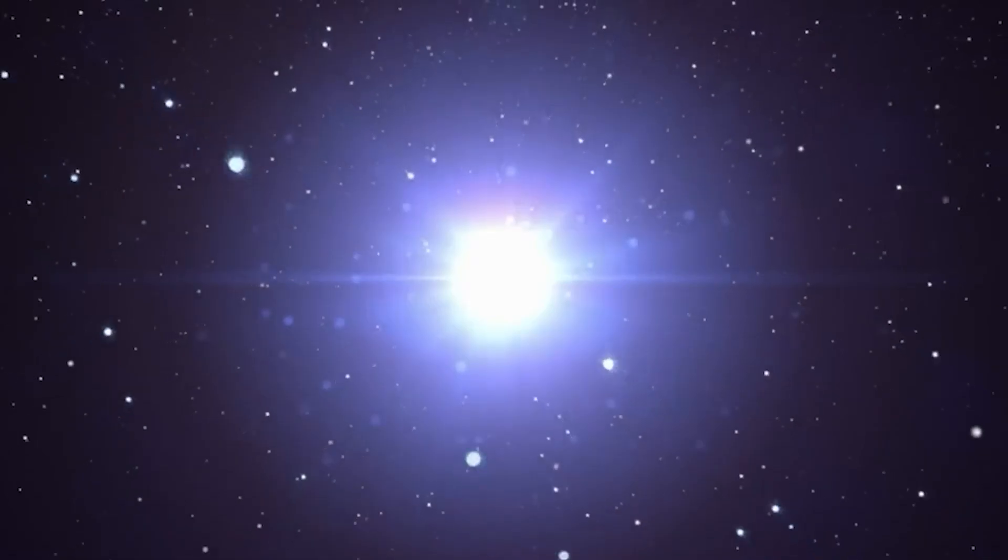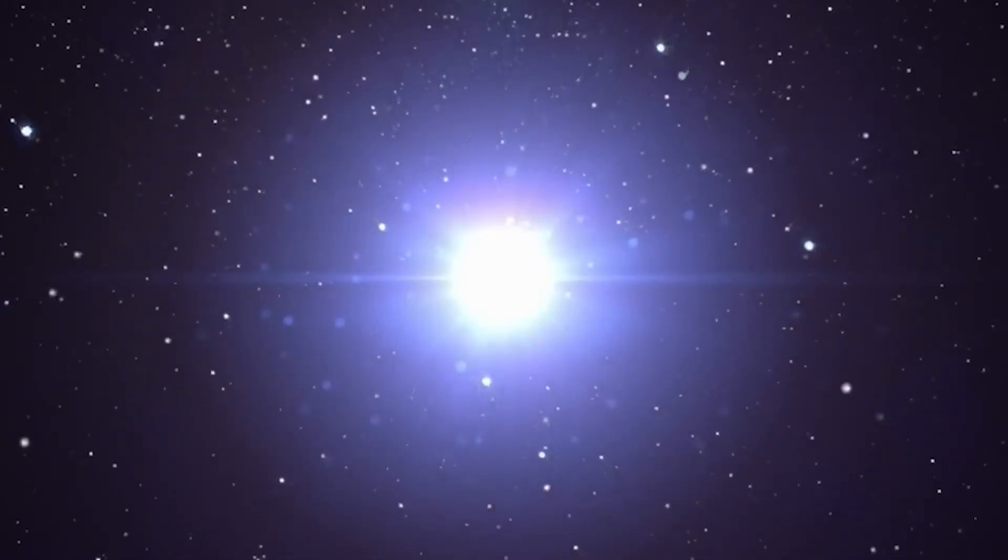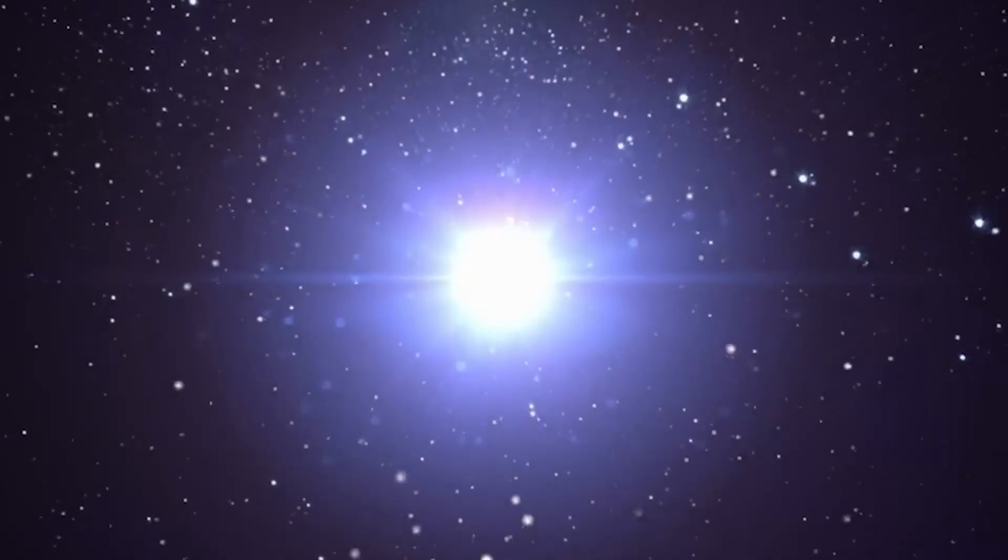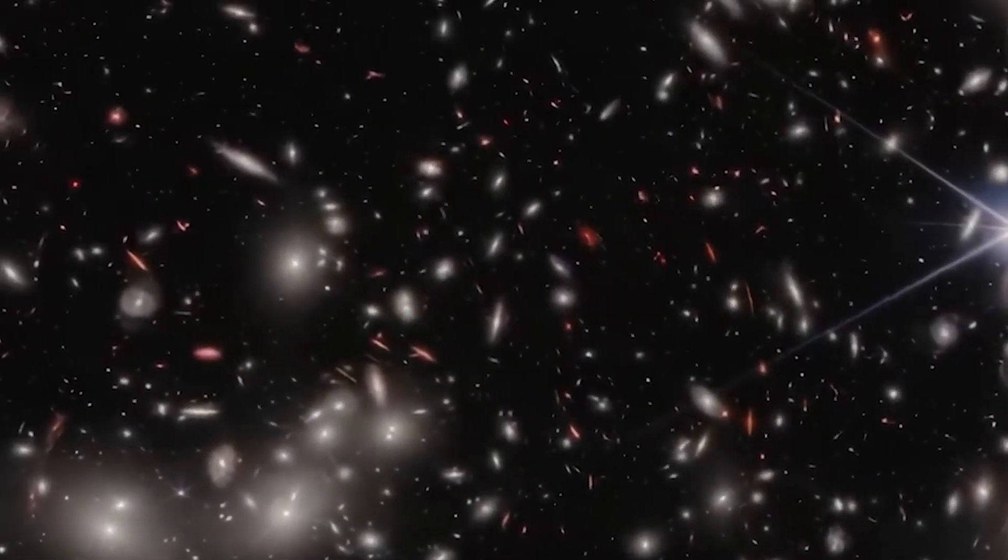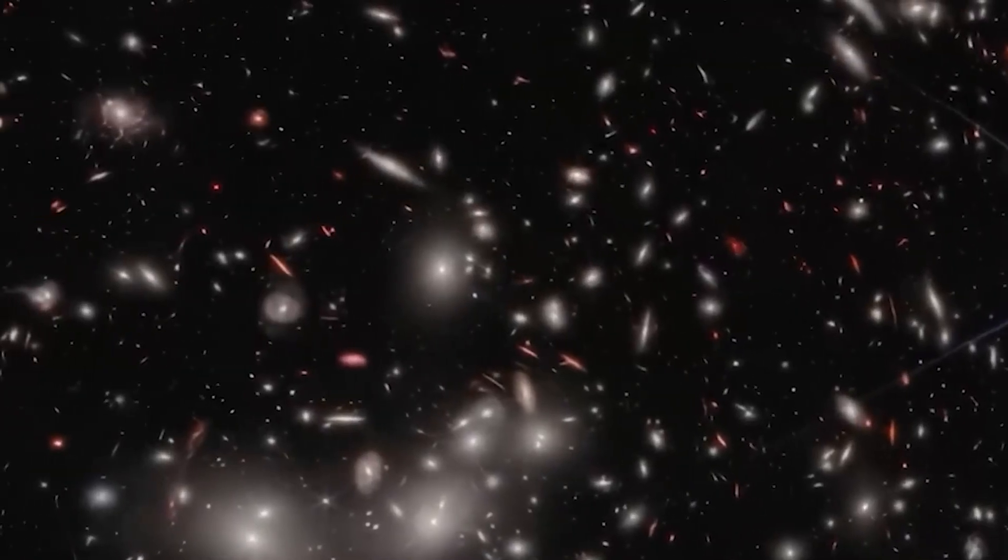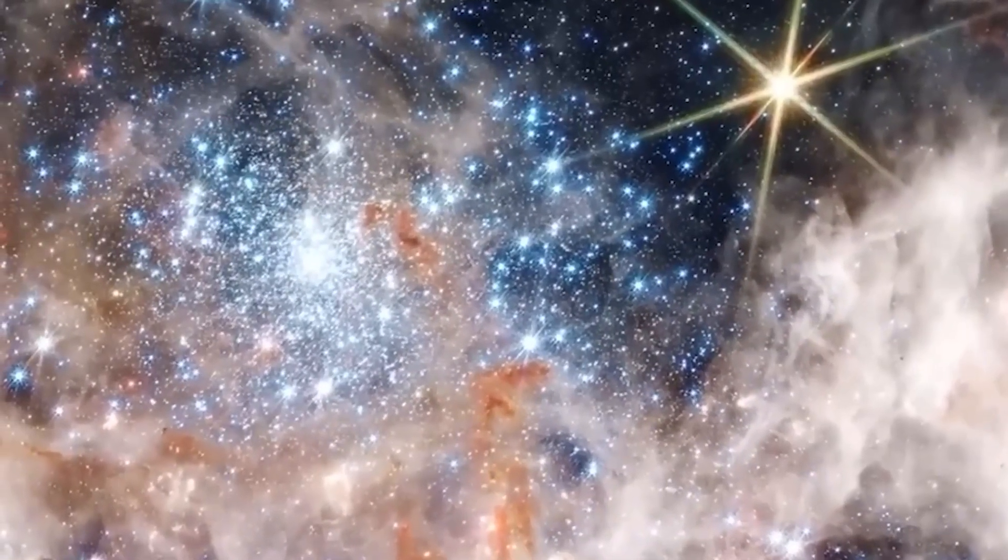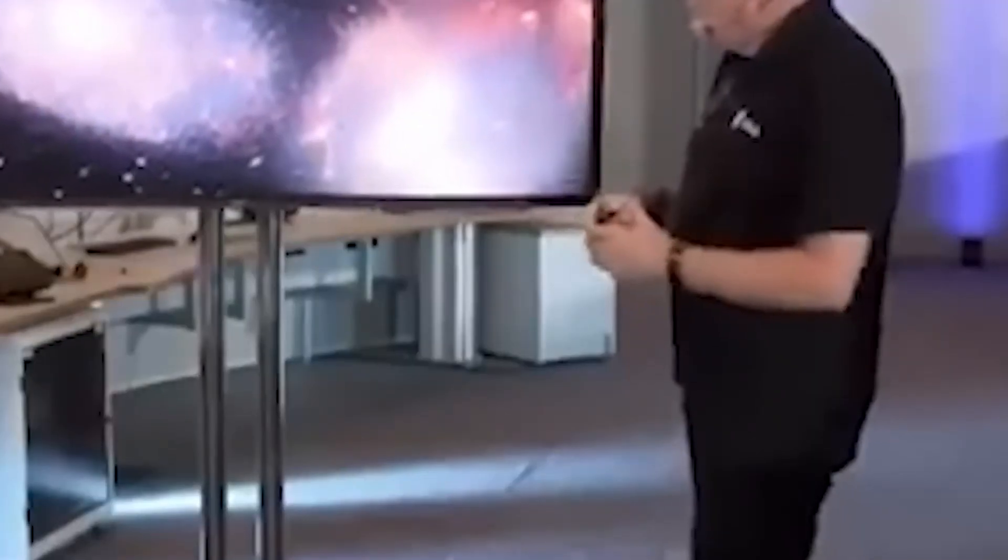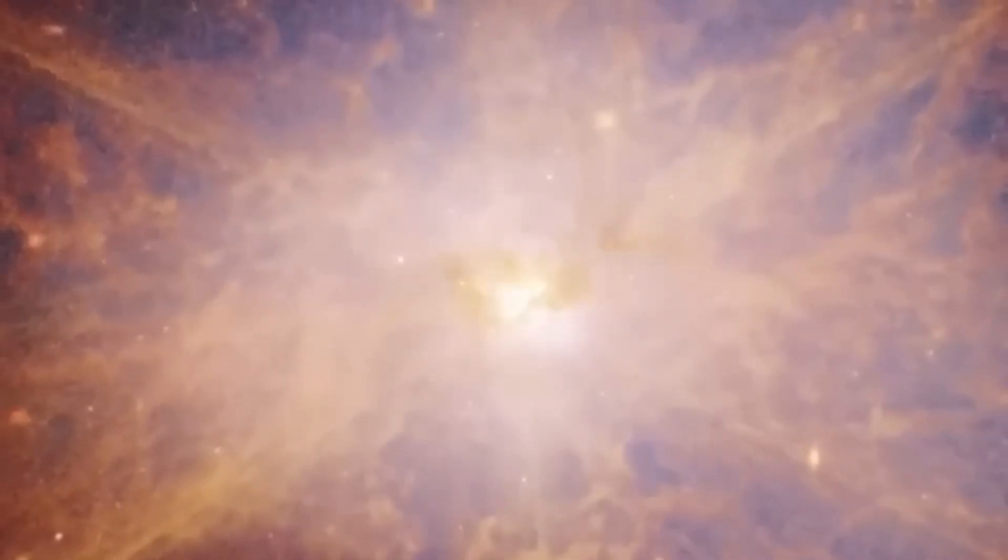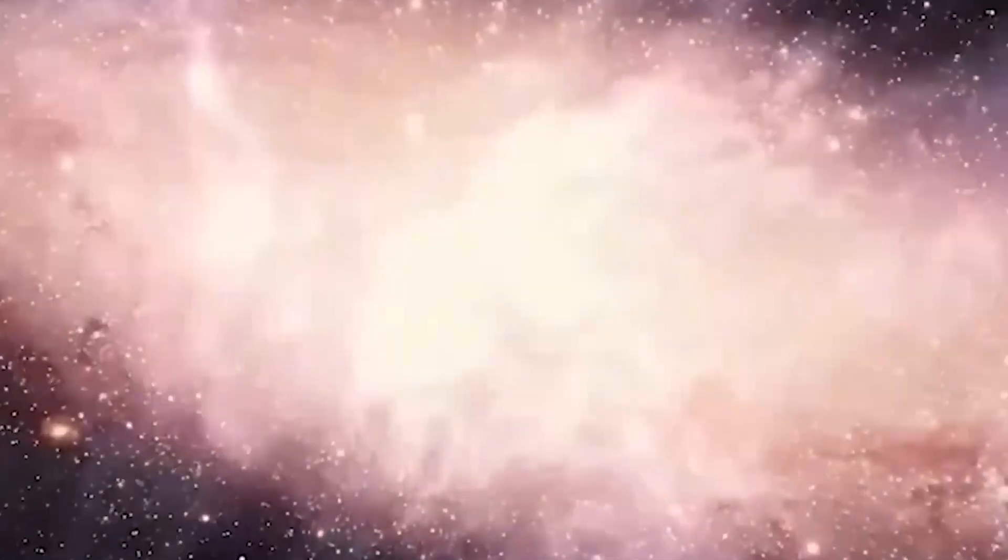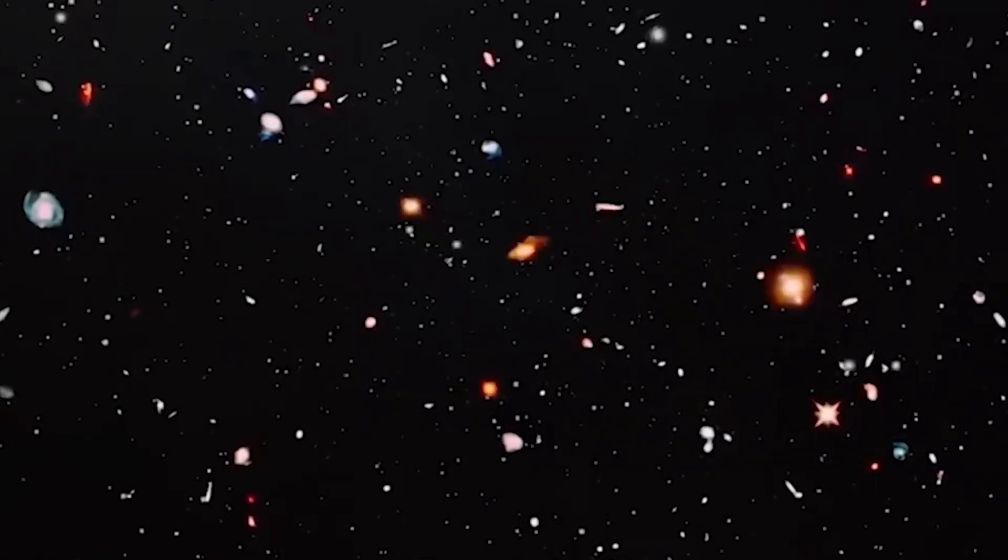The shock isn't just that galaxies appeared early, it's how big they are. Some of these early structures rival our own Milky Way in mass. Galaxies that should have taken billions of years to form, existing only a few hundred million years after time itself began. Oxford cosmologist Catherine Blendell explained it this way: it's as if you looked back to see the first sparks of civilization, and instead found entire cities already glowing.